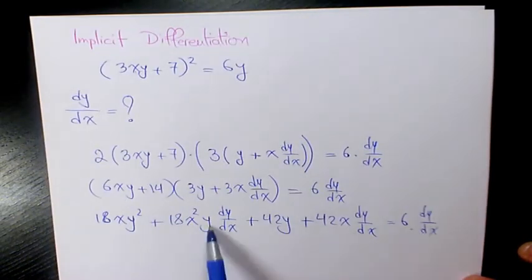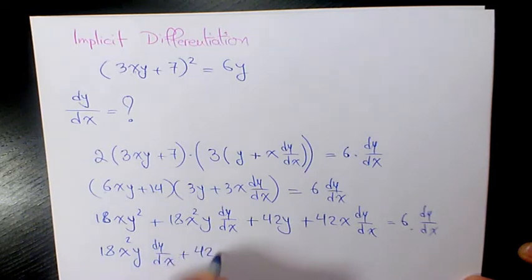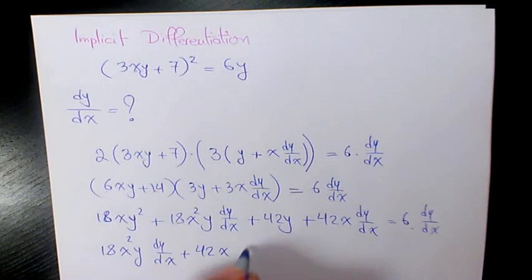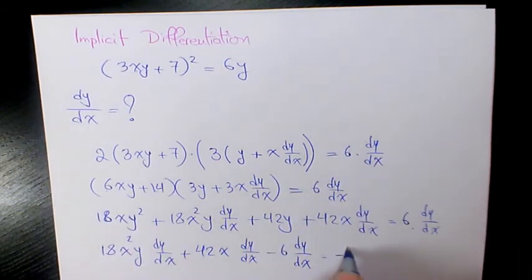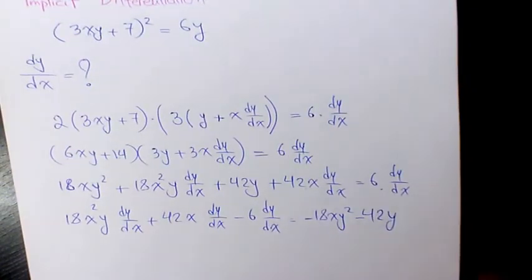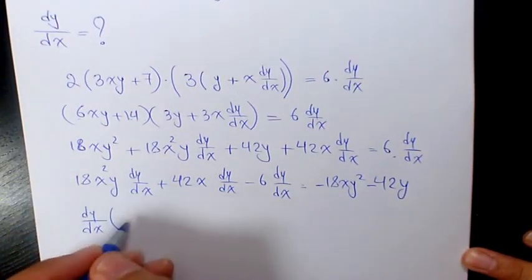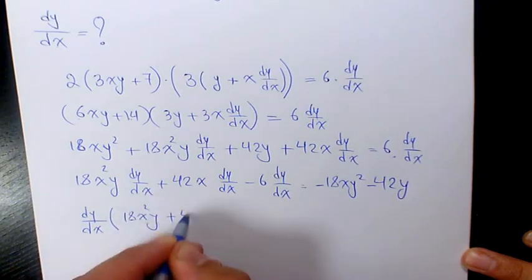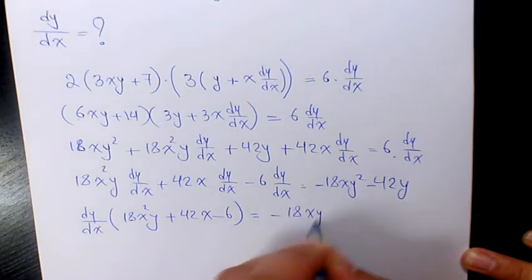So we move these items to the left. We have 18x squared y dy over dx plus 42x dy over dx minus 6 dy over dx, and we move these two terms to the right hand side: negative 18xy squared minus 42y. Then I factor dy over dx, giving 18x squared y plus 42x minus 6 equals to negative 18xy squared minus 42y.